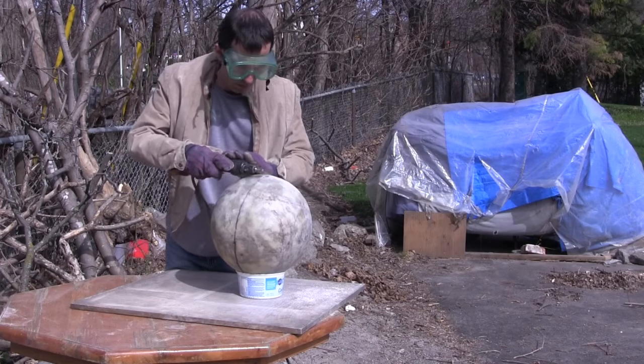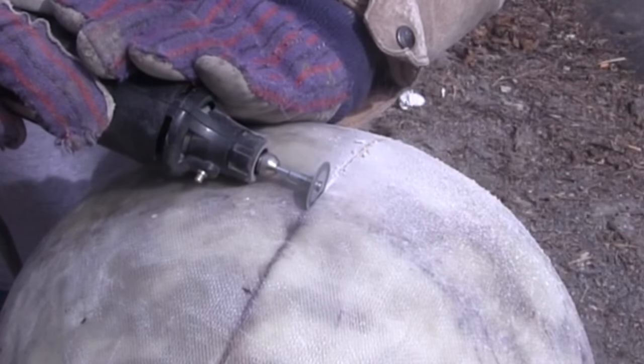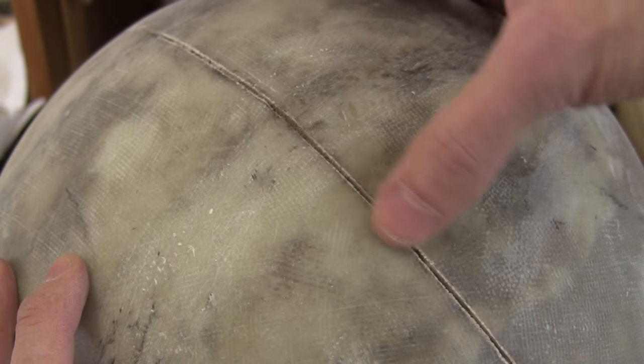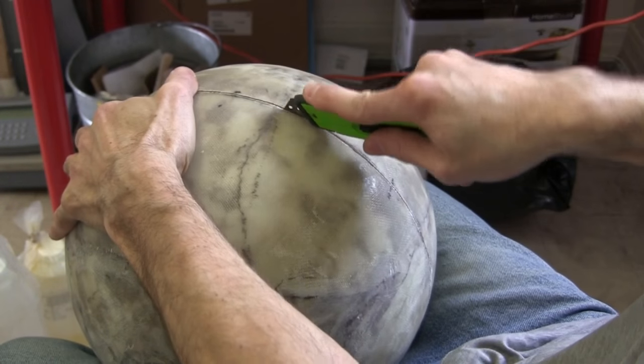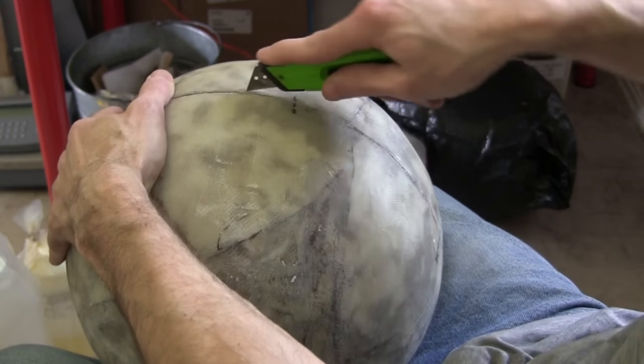I then use my Dremel with a thin circular blade to cut it open at the equator. It doesn't cut all the way through though, but at least it cuts through the resin and fiberglass to the cardboard. So I next go at it with a knife.